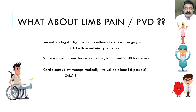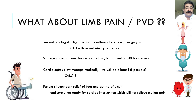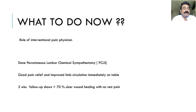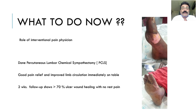The patient's own concern was pain relief of the foot and healing of the ulcer — he was not ready for any coronary revascularization because that would not relieve his leg pain. This was a tricky situation. Here came the role of the interventional pain physician. I performed a percutaneous lumbar chemical sympathotomy at L2 and L4 on the affected side. There was good pain relief and improved circulation of the lower limb immediately on the table, and near about two weeks later there was more than 70% healing of the right foot ulcer with no rest pain — a very rewarding and satisfactory result.